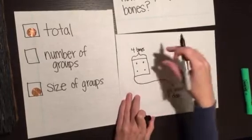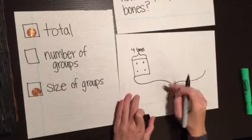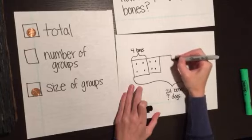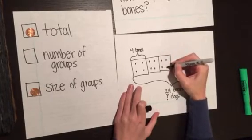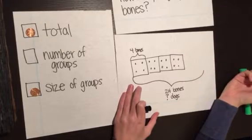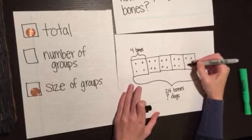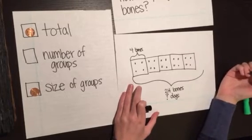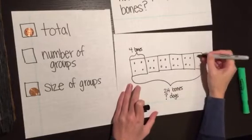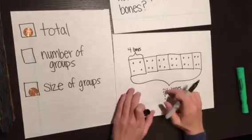Now I'm going to keep on drawing units until I get to my total 24. So I'm at 4, 8, 12, 16. Think about if I need to keep on going. Yes. 20. Do I need to keep on going? Yes, because I haven't gotten my total yet. 24. Do I need to keep on going? No, because I got to my total.